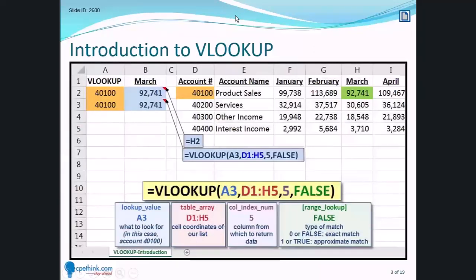You can see the table extends further beyond column H. A lot of people will select the entire table even though they're only returning data from column H. I prefer not to do that. The trick I'll show you gives us the answer to the third argument, which is the column index number. VLOOKUP looks down the first column, finds a match, tracks across that row, and needs to know which column to return data from. In this case we're returning data from the fifth column.